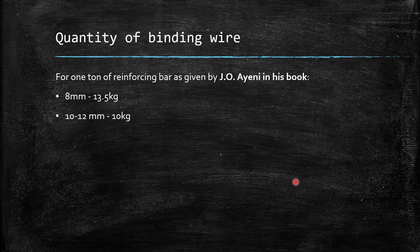For 10 to 12 mm bar, per ton of steel, we need 10 kg of binding wire. For 16 to 25 mm bar, per ton of steel, we need 8 kg of binding wire.